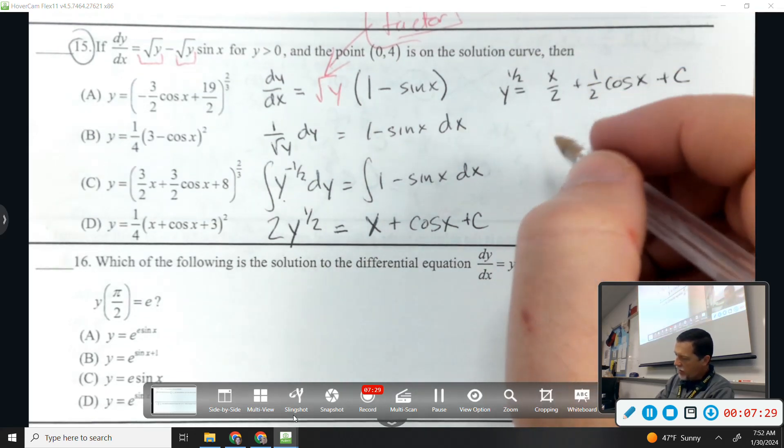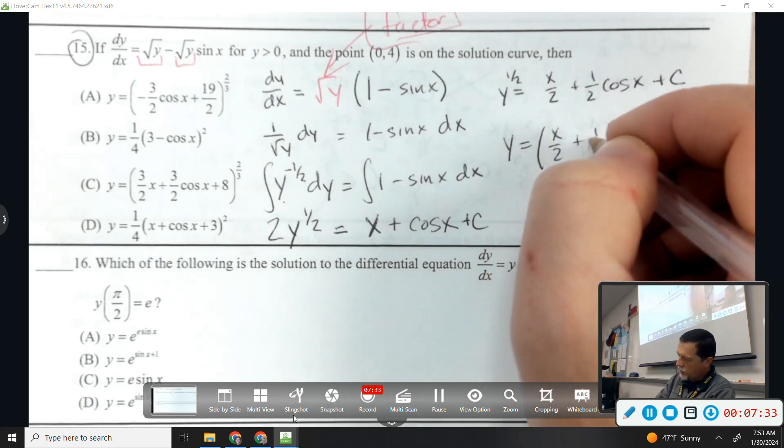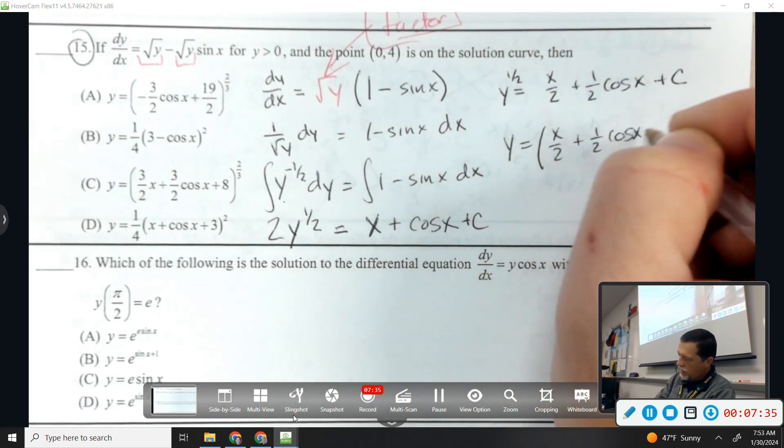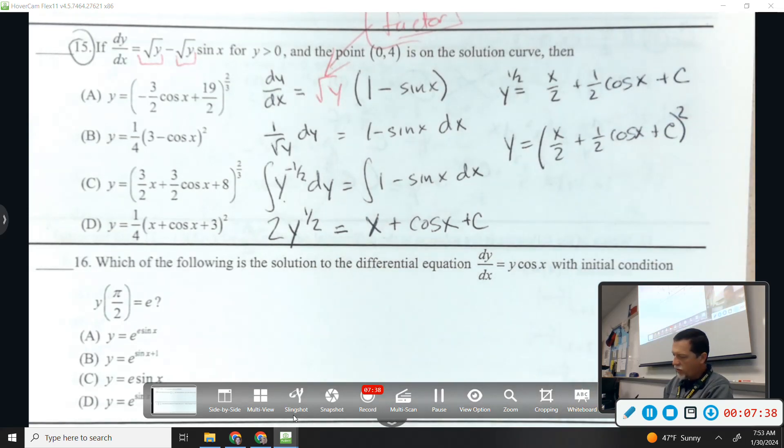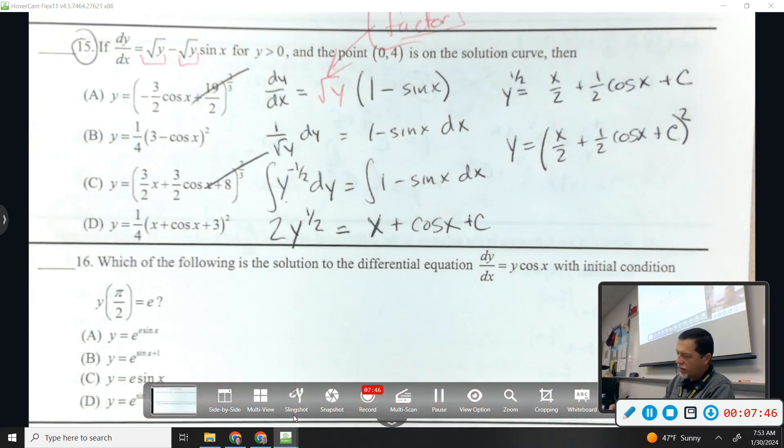So let's divide everybody by 2. X over 2, 1 half cosine x, plus c. And then square both sides. And start looking at our answer choices. And there's only one thing it could be. Like two-thirds and two-thirds, those are out. So they're squared and squared.